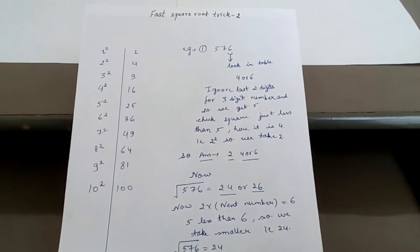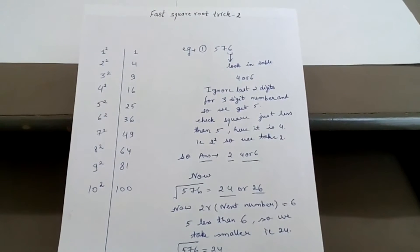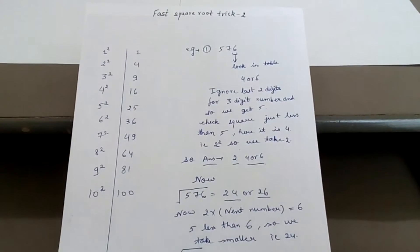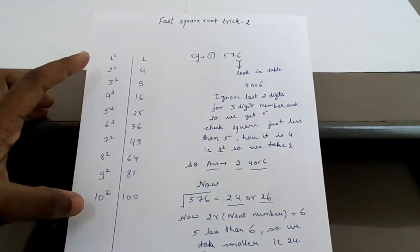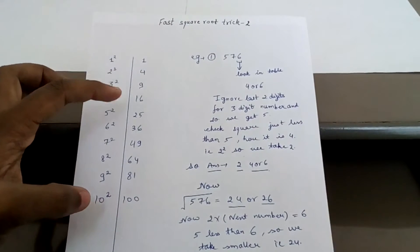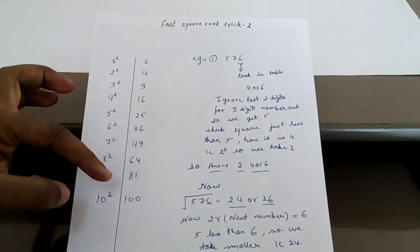Now this is the second trick I am telling you. First, you make the table from square of 1 to 10: that is 1, 4, 9, 16, 25, 36, 49, 64, 81, and 100.